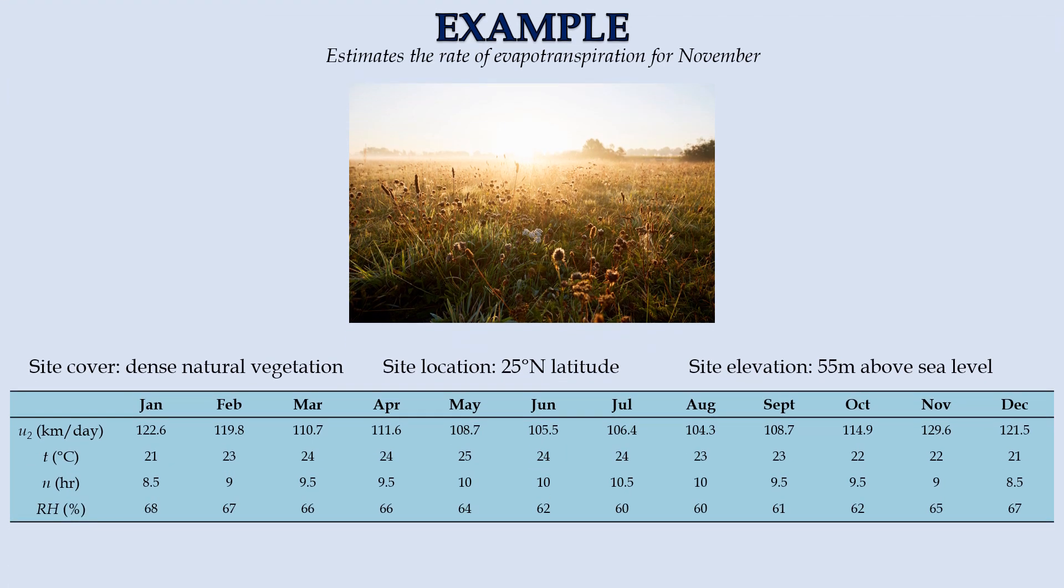Let's look into an example on the implementation of Penman equation. The site we study is located at a latitude of 25 degrees north and 55 meters above sea level. It is covered with dense natural vegetation. Data for the mean wind speed at 2 meters above ground level, temperature, relative humidity, and average sunshine duration are available for the past 12 months. What would be the evapotranspiration in November?